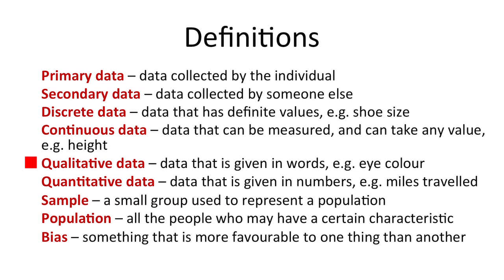Qualitative data is data that is given in words, for example eye colour. The particular characteristic we're recording would be given in words rather than numbers. Quantitative data however is data that can be given in numbers — for example miles travelled in a particular journey, time taken to complete an experiment and so on. The responses would be numerical.